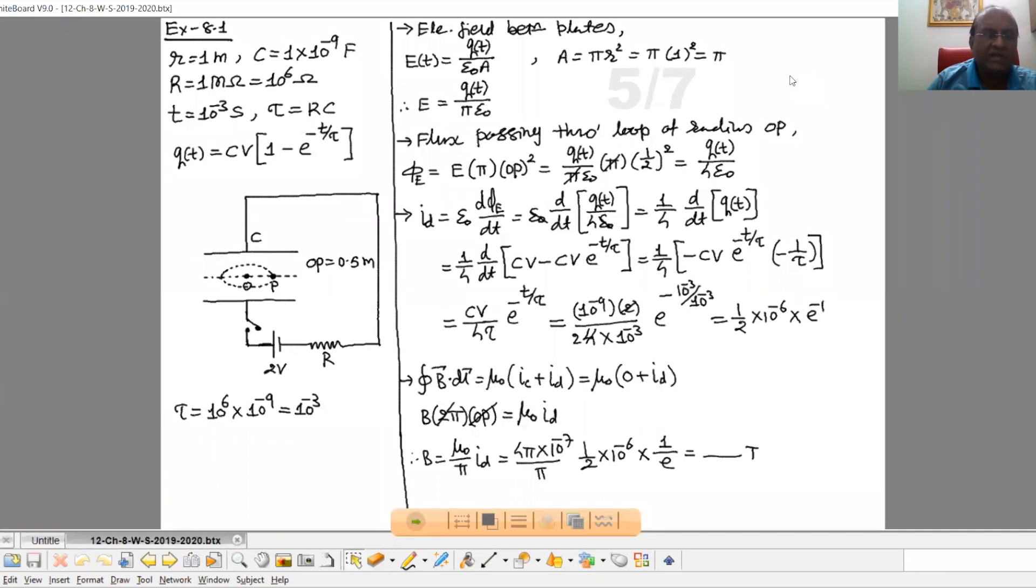Minus t by tau where tau is called the time constant and equals RC. To the center and periphery of the plate. It implies that the radius of the plate is given as 1 meter, so you have to find the magnetic field at distance half meter from the center of the plate between these two plates.